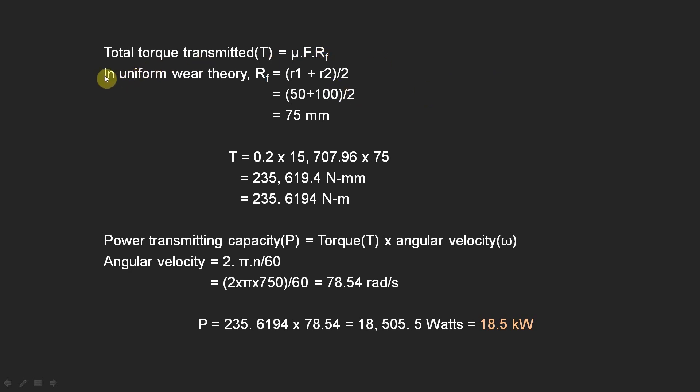If you remember, in uniform wear theory, friction radius is (r1 + r2)/2, which is (50 + 100)/2, which is 75 mm. So torque transmitted is equal to μ is 0.2 × force 15,707.96 × 75.